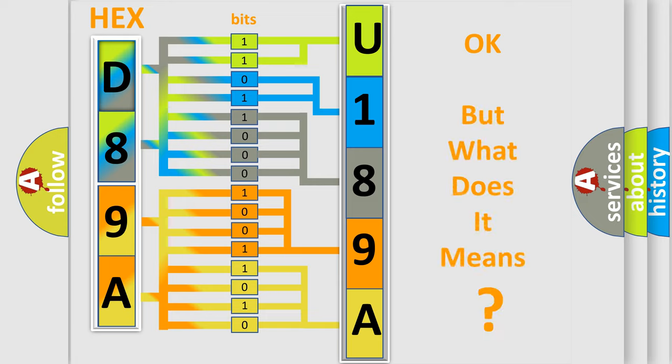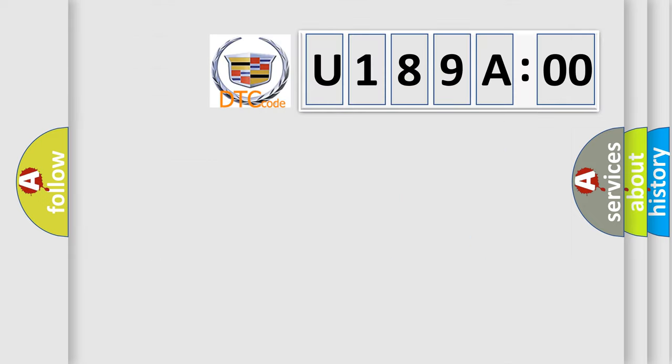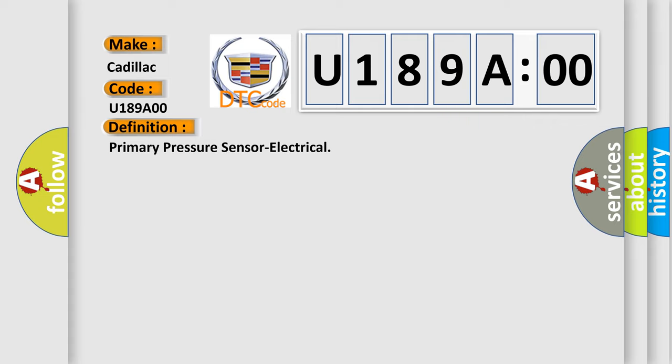The number itself does not make sense to us if we cannot assign information about what it actually expresses. So, what does the diagnostic trouble code U189A00 interpret specifically for Cadillac car manufacturers? The basic definition is: primary pressure sensor electrical.